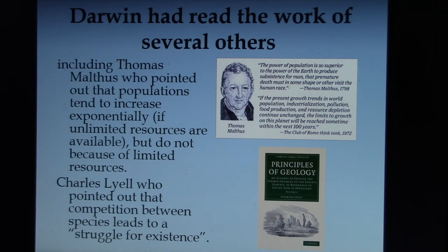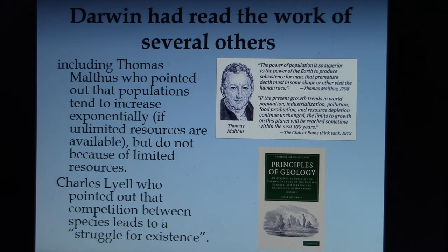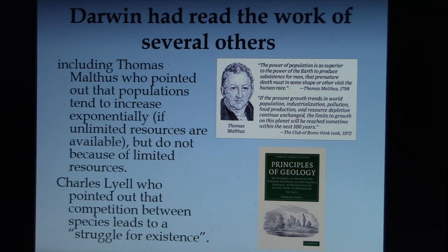There was also Jean Baptiste, who had an idea about change before Darwin — the evolution of acquired characteristics. Not only was Darwin well read, but he was also a naturalist who spent years aboard the Beagle, a ship, where he observed much of what went into his theory. Wallace was also a naturalist working in an archipelago — a group of islands — where he noticed the same patterns, leading him to the same idea.